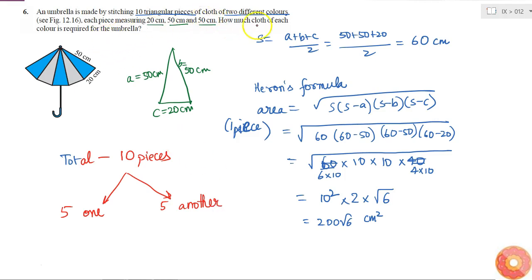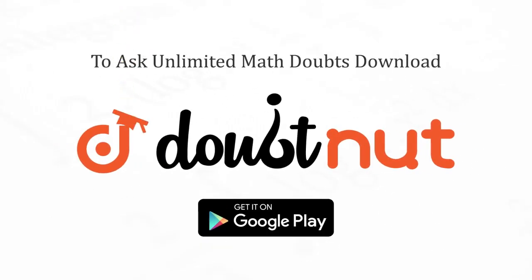So the question is how much cloth of each color is required for the umbrella. So cloth required of one color is 5 times of this triangle, which is 5 into 200 root 6, that is equal to 1000 root 6 cm square. This is the area of one color of cloth. Similarly for the other color of cloth also, the area will be 1000 root 6 cm square.